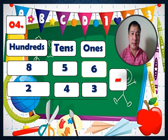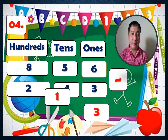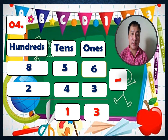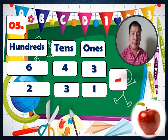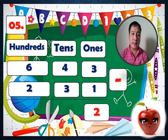Practice number four: 856 minus 243. Ones: 6 minus 3 equals 3. Tens: 5 minus 4 equals 1. Hundreds: 8 minus 2 equals 6. The answer is 613.